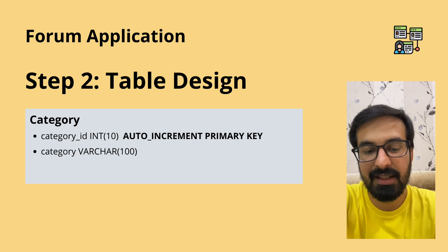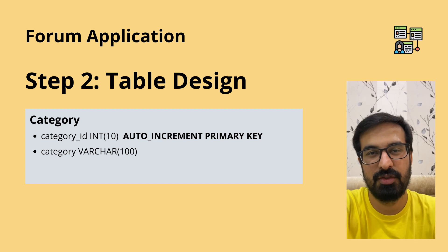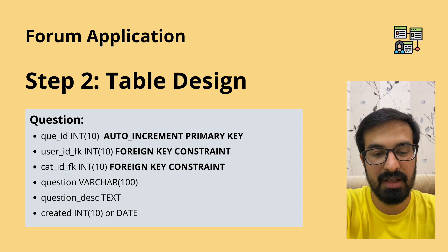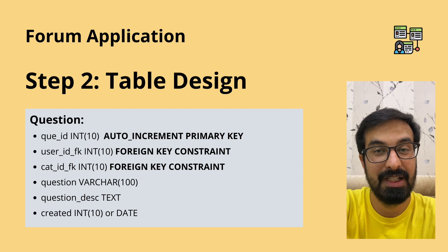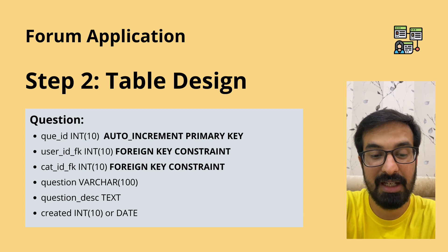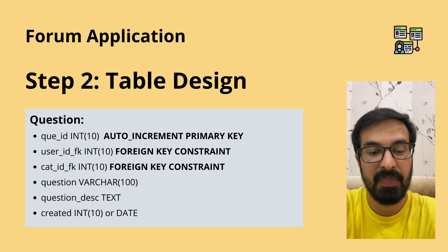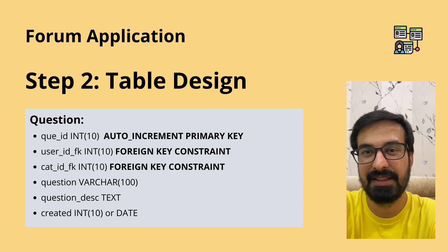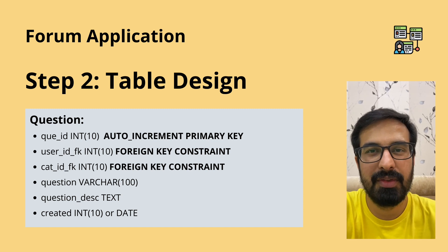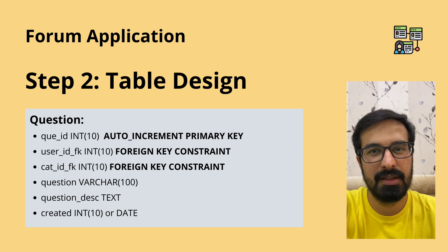Hashing is different from encryption, so please do some research around it and hash your password before saving it to the database. In the category table we again have a category ID as auto-increment primary key, and a category name column. In the question table, question ID is the primary key (auto-increment), then user_id_FK as a foreign key referencing the user table, category_id_FK as a foreign key, question title, question description as a TEXT data type, and a created column storing a Unix timestamp — which is platform independent — or you can use a DATE data type.